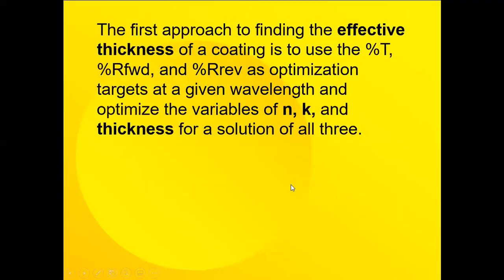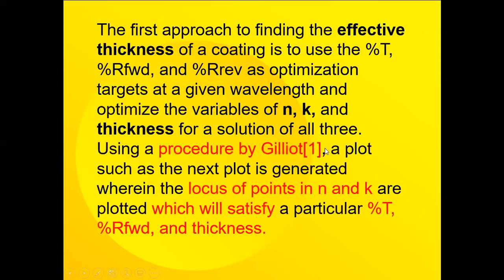So here's what we're talking about here in that we first get the effective index of the coating as best we can using the percent T, the R forward or reverse as optimization targets. Given a wavelength, we optimize the N and K variables for a solution of all three. Using the procedure by Kyo, then a plot of these will lead us to which exact thickness is the correct answer.